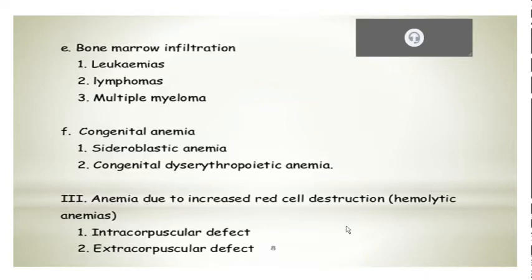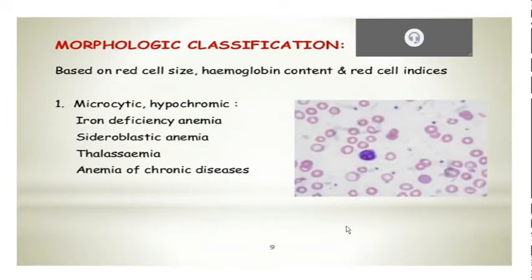Then you have a morphological classification where it's based on RBC size, hemoglobin content, and red cell indices. You have microcytic hypochromic anemia, which is iron deficiency — small and paler RBCs which can be seen in iron deficiency anemia, sideroblastic anemia, thalassemia, and anemia of chronic diseases.